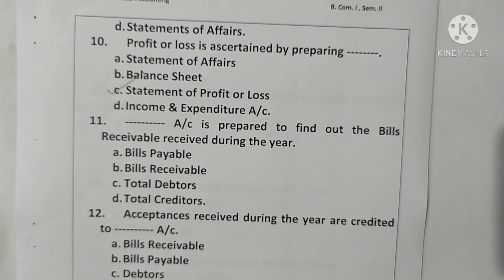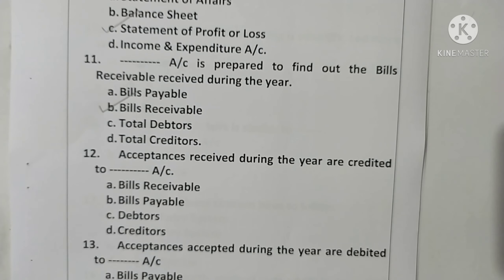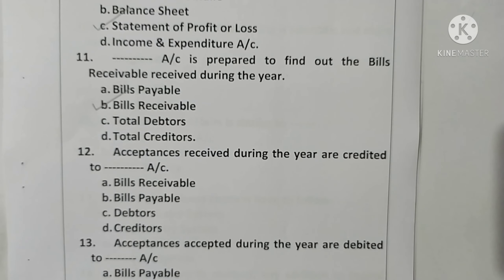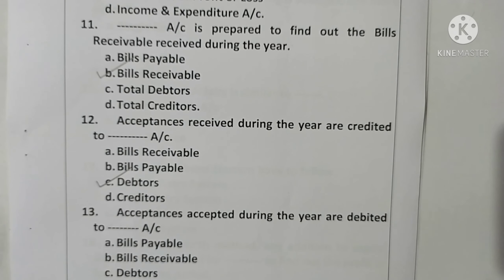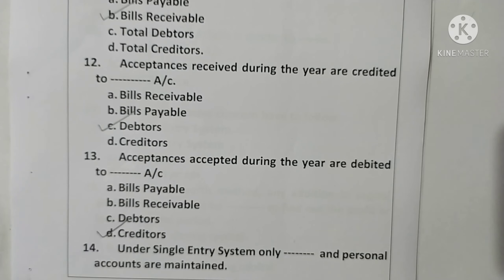Question 12: Acceptances received during the year are credited to the acceptance received from debtors account. Option C is correct. Question 13: Acceptances accepted during the year are debited to the creditors account. Option D is correct.